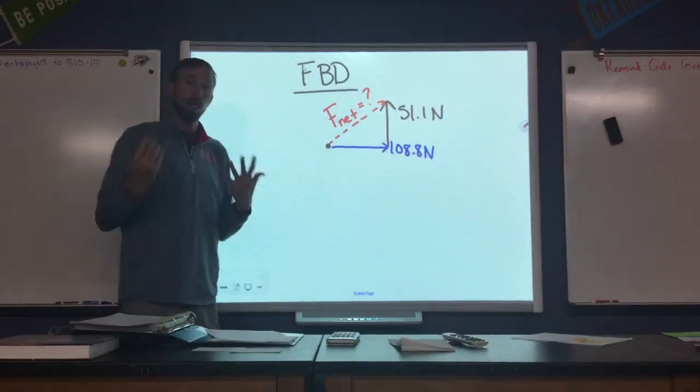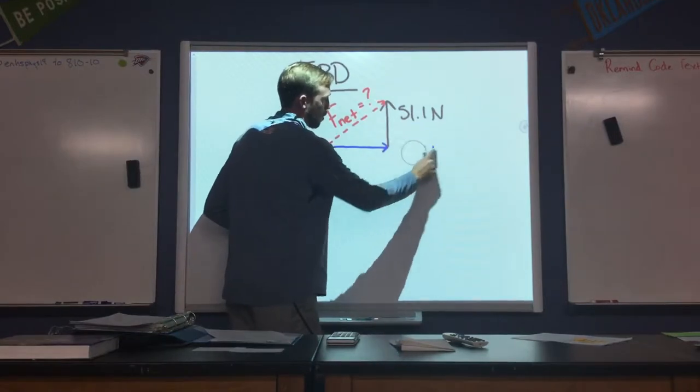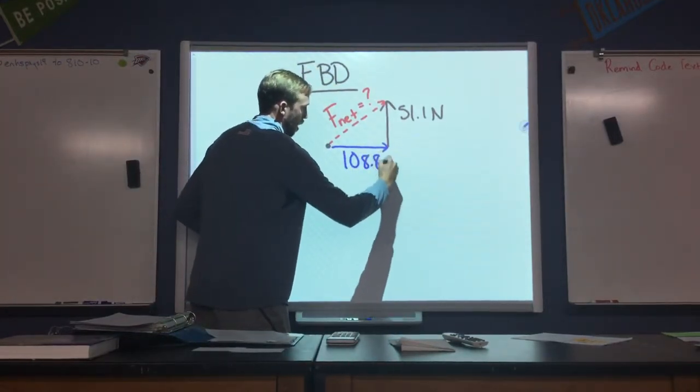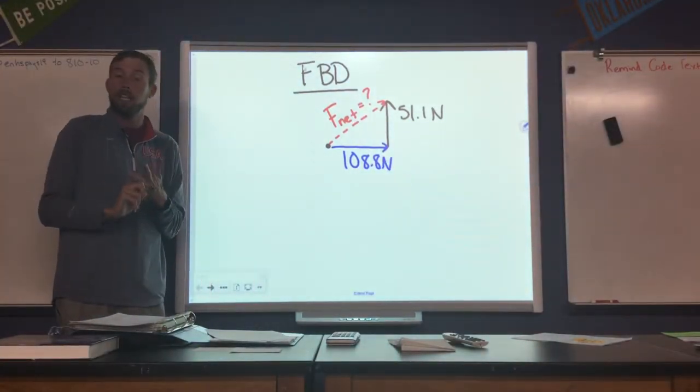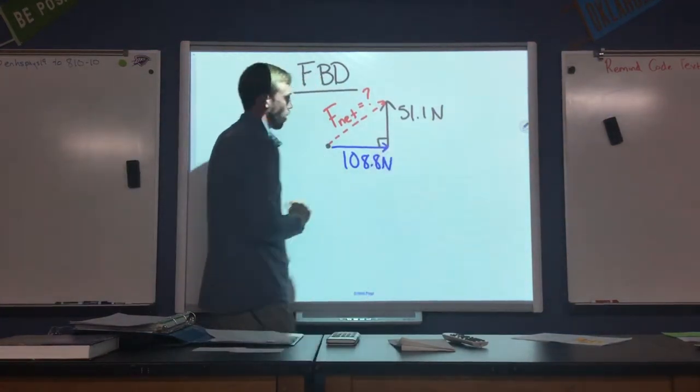So what we can do here is because we have a force directly in the east direction and a force directly in the north direction, we can model this as a right triangle and we can apply a trig function or Pythagorean theorem depending on what we're trying to find. So we'll model this as a right triangle.